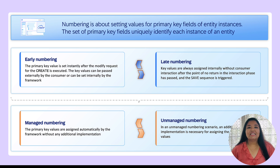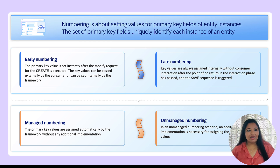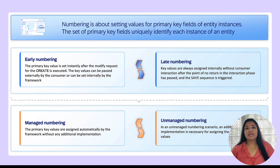Numbering refers to setting values for the primary key fields of entity instances at runtime in RAP. Each business object has a unique primary key, which can be a combination of one or multiple key fields defined in the CDS view, which cannot be changed after the create. RAP supports different strategies for assigning these key values based on when and by whom they are set — like early numbering or late numbering, and by whom, for example, the consumer, the application developer, or the framework itself.